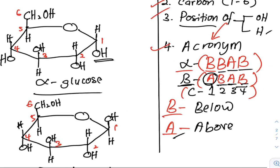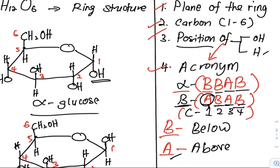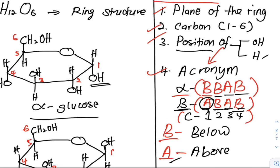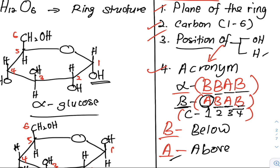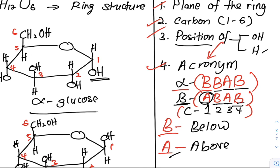So remember, this is our checklist on how to sketch alpha glucose and beta glucose, and we can use this acronym. For alpha glucose: BBAB. For beta glucose: ABAB. B for below the plane of the ring, and A for above the plane of the ring.